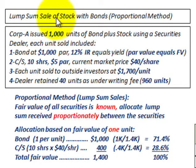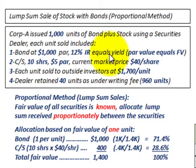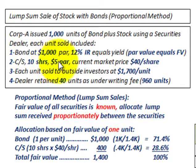We're going to be looking at a lump sum sale of stocks with bonds, using the proportional method to account for this. Corporation A issued 1,000 units of a bond plus stocks using a securities exchange dealer. Each unit includes one bond at $1,000 par amount with a 12% stated interest rate equal to its yield rate, so the bond sells at par. Each unit also includes 10 shares of common stock with a $5 par value and a current market price of $40 per share.